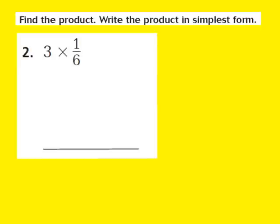Now let's take a look at question number 2. The directions say to find the product and to write the product in simplest form. For question number 2, they give us the whole number 3 times the fraction 1/6. Now remember, if they give us a whole number, we need to first turn that whole number into a fraction. So I'm going to rewrite 3 as 3 over 1, giving us 3/1 times 1/6.